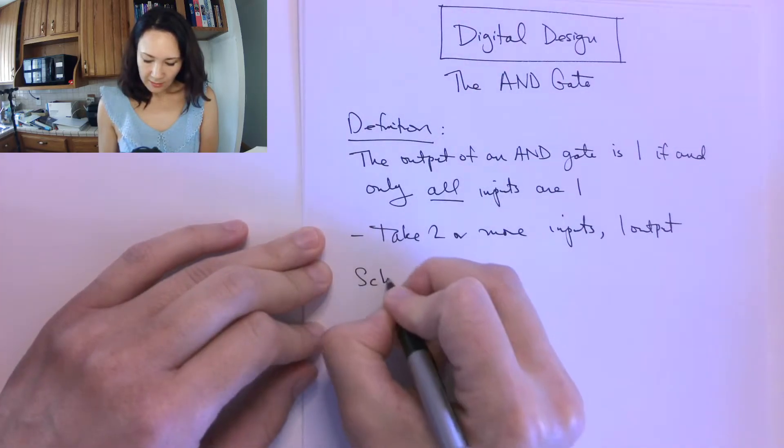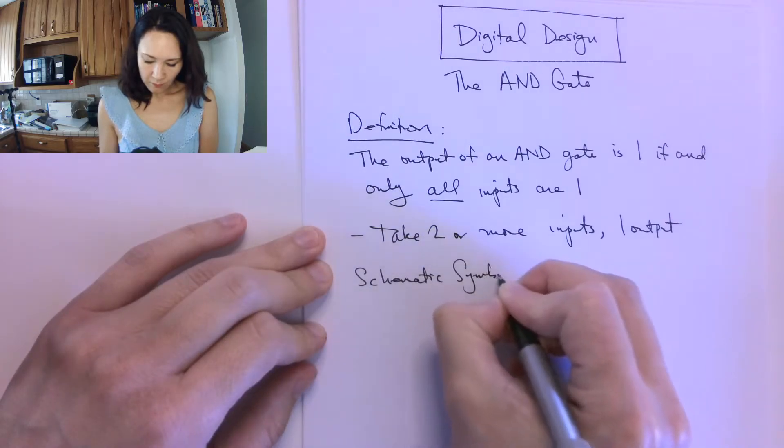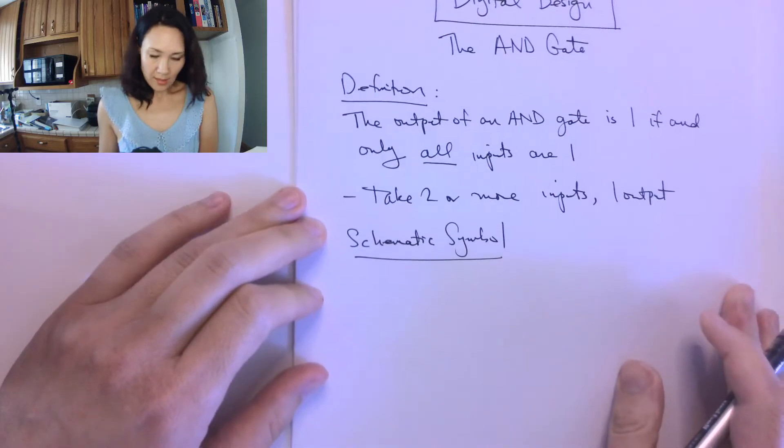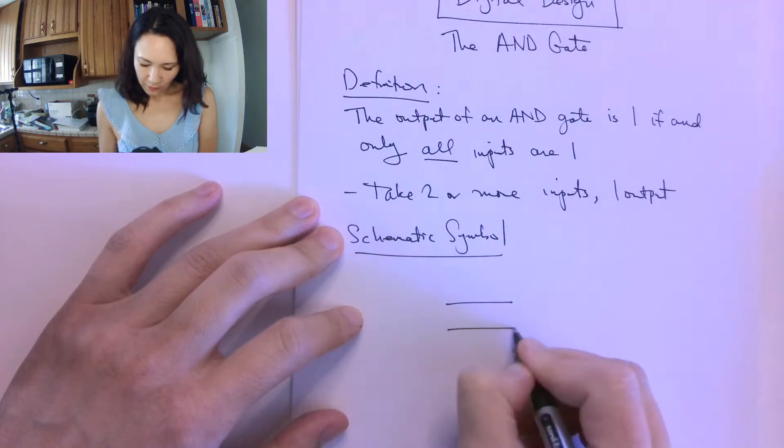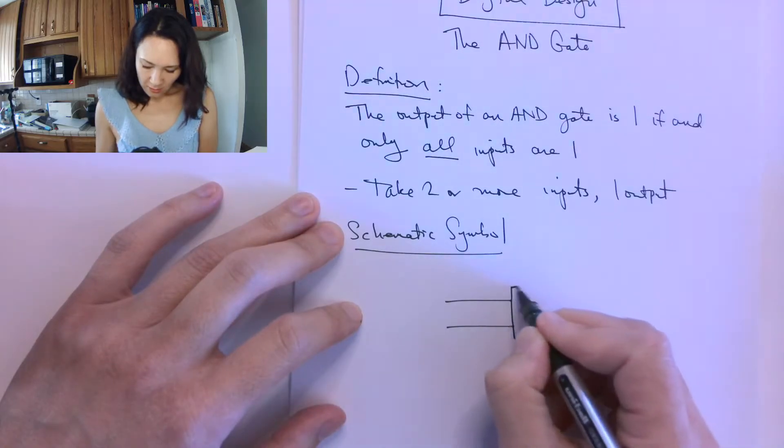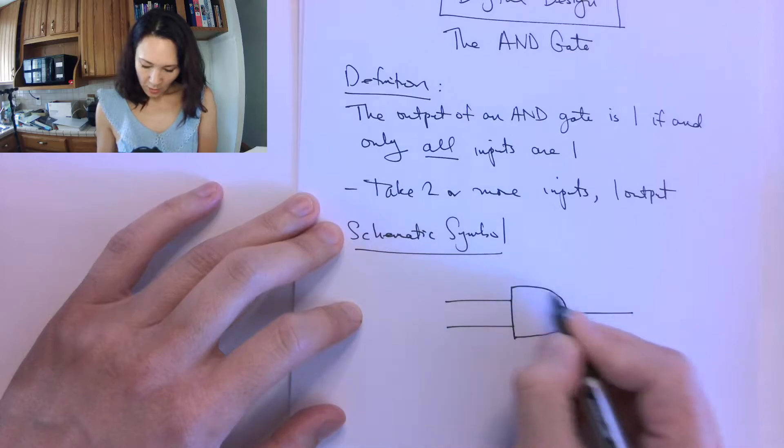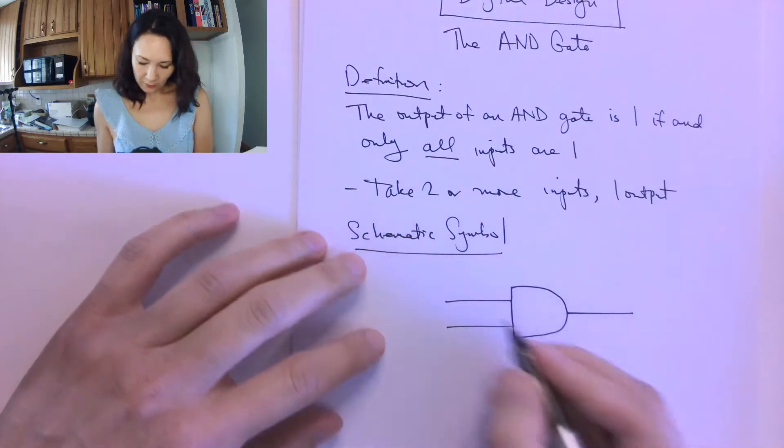The schematic symbol for the AND gate looks like this. For a two-input AND gate, we have our two input lines coming in, and then there's a straight line here, a rounded edge here, and then the output comes over here.